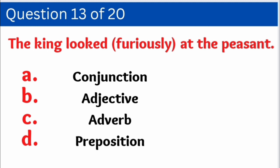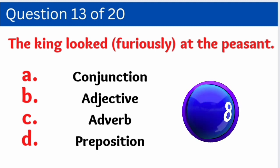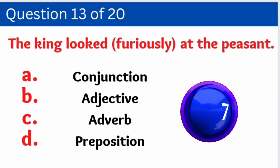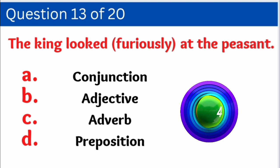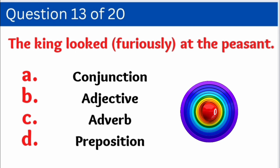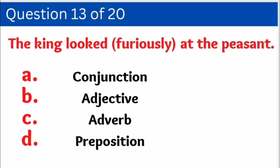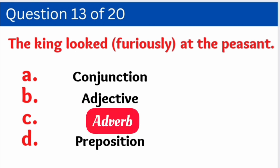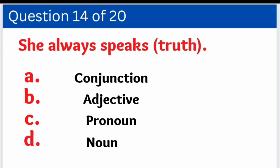Question number thirteen: 'The king looked furiously at the peasant.' We have to identify how 'furiously' is used. Options are: A. Conjunction, B. Adjective, C. Adverb, D. Preposition. And the right answer is option C — Adverb. Yes, 'furiously' is an adverb.